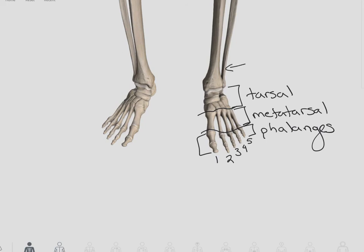In the lower extremity, we have the fibula on the baby toe side, and the tibia on the side of the great toe.